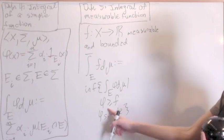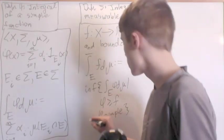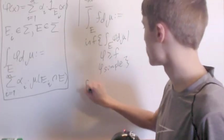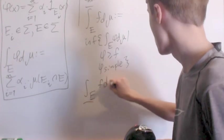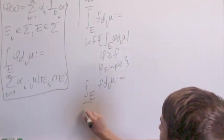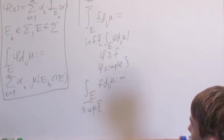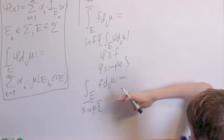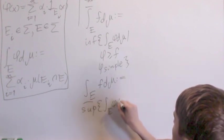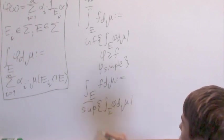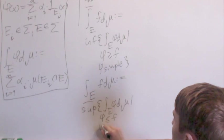So we have all the larger ones, and we take the greatest lower bound. And then the lower one is where we have, as you may have already guessed, the supremum opposite of infimum, this is the lowest, greatest bound, of the integral over e of phi d mu, such that phi is less than or equal to f, and phi is simple.